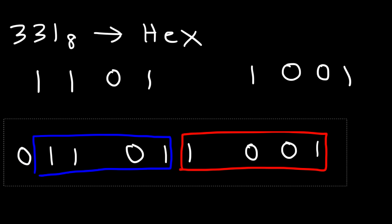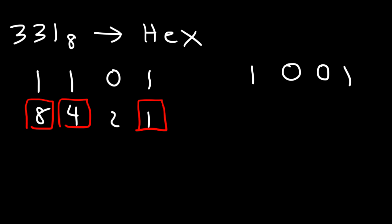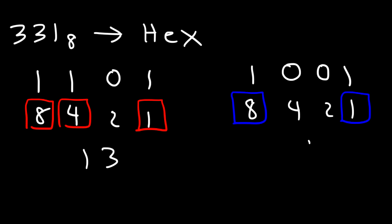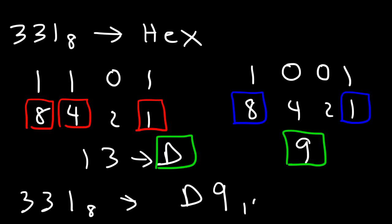Now let's convert those binary numbers into decimal values. Using place values 1, 2, 4, 8 — we have a 1 next to the 8, the 4, and the 1. So we add those up: 8 plus 4 is 12, plus 1 is 13. For the second group, using 8, 4, 2, 1 — we have a 1 next to the 8 and the 1, so 8 plus 1 is 9. Now 13 corresponds to D in the hexadecimal system, so we have D and then 9. Our final answer is that 331 in the octal system corresponds to D9 in the hexadecimal system.